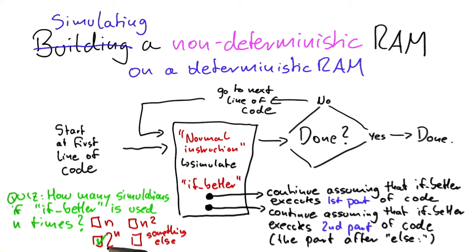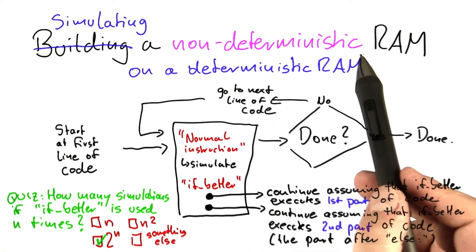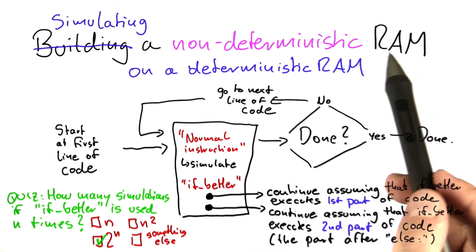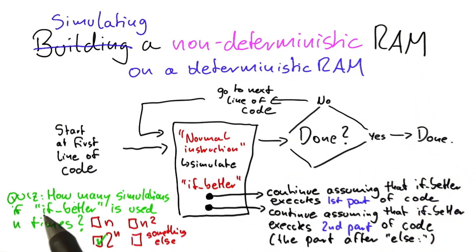And what that means is, for example, for vertex cover, yes, we can solve vertex cover on a non-deterministic RAM in polynomial time. But if we do the simulation of that non-deterministic code, we end up with exponential time again.